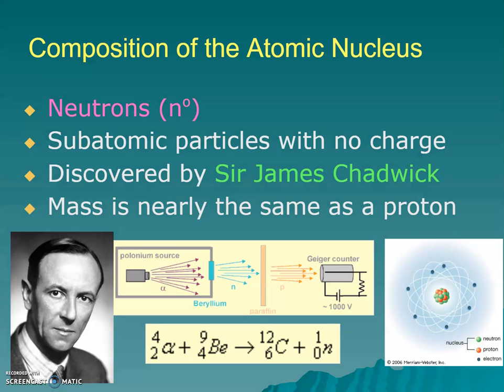A neutron was discovered by Sir James Chadwick much, much later. He was doing work with nuclear sources, alpha particles.